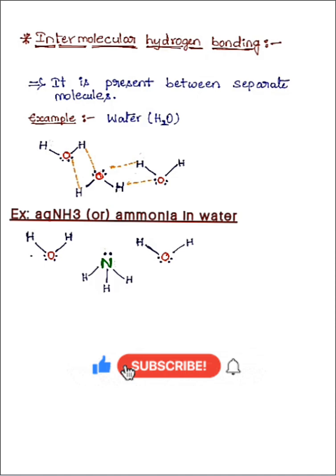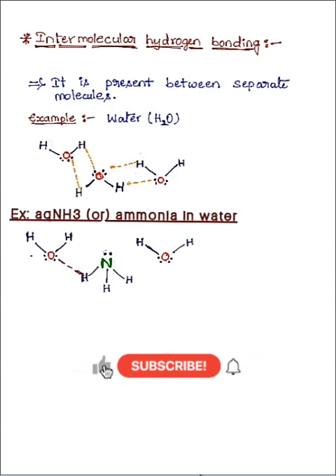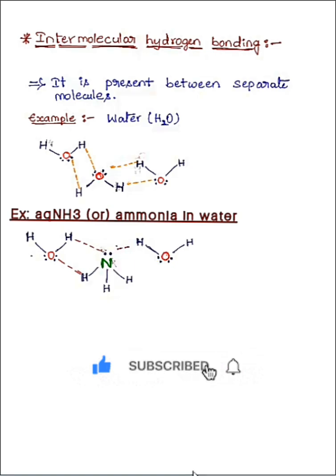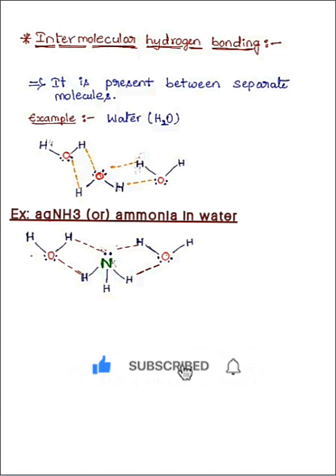Hydrogen bonding happens between ammonia and the water molecule like this: the electronegative oxygen atom of the water molecule is attracted to the hydrogen of the ammonia molecule, and in the same way, the electronegative nitrogen of ammonia is attracted to the hydrogen of the water molecule. So intermolecular hydrogen bonding is not limited to same-type molecules — it can also exist between different molecules, as in aqueous ammonia.